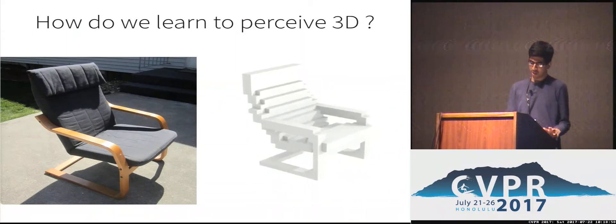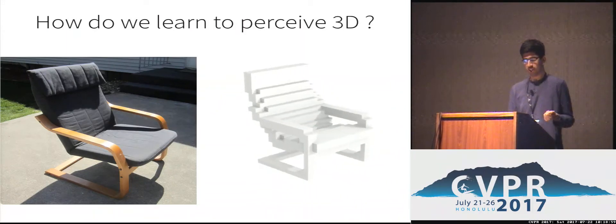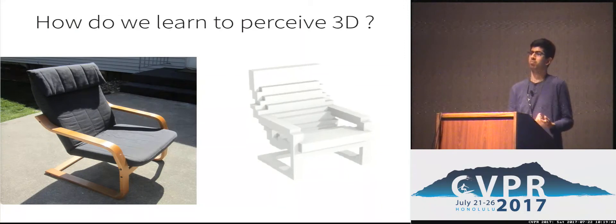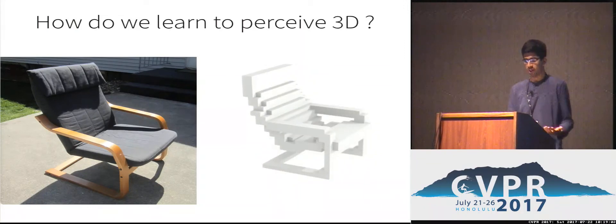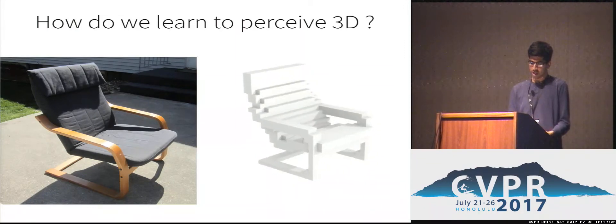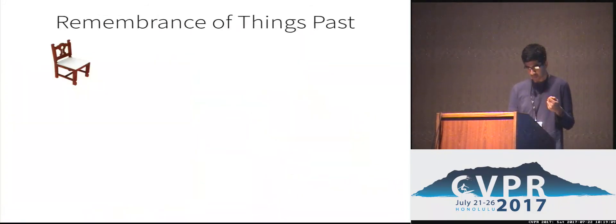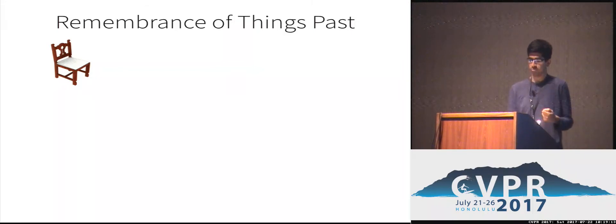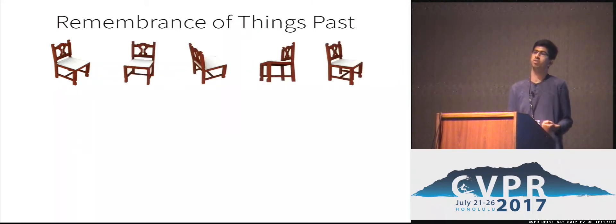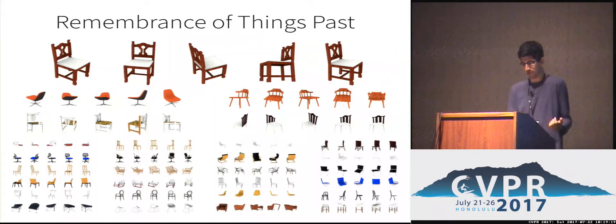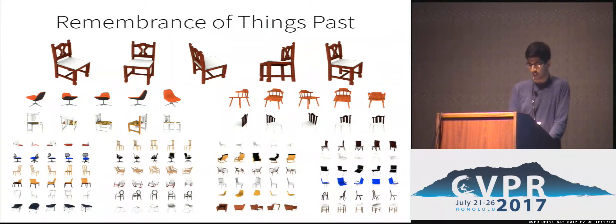So how is it that we can do this? A single image is ill-posed, so we clearly have to rely on prior experience. In particular, in the past, you may have seen a different chair from a single viewpoint, but as you moved around, you observed it from various other perspectives as well. And you have seen other chair instances. Additionally, as an active agent, you would know how you moved around to obtain these different views.